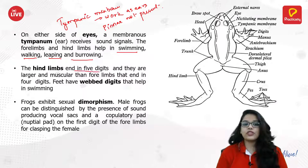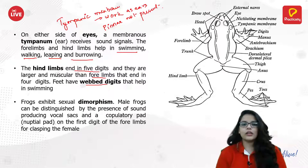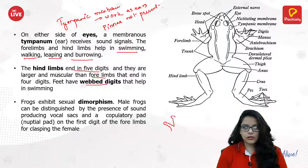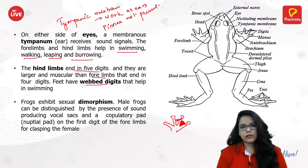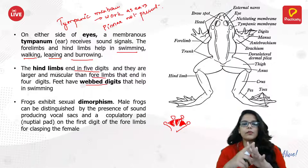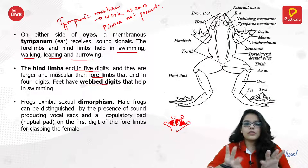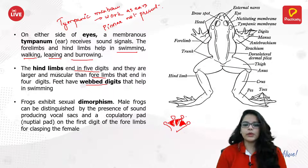The hind limbs end in five digits and are larger and more muscular than the forelimbs. They have webbed digits — a membrane between the fingers — which makes it easier for them to swim.